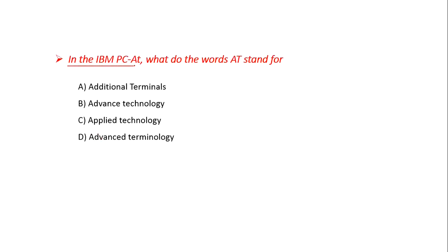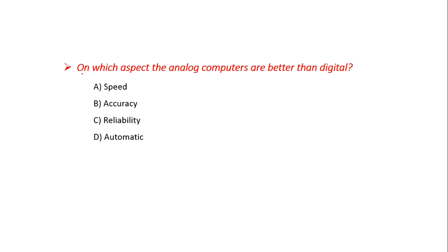In the IBM PC-AT, what do the words AT stand for? Option A: Additional Terminals, B: Advanced Technology, C: Applied Technology, D: Advanced Terminology. The answer is B: Advanced Technology. On which aspect are Analog Computers better than Digital? Option A: Speed, B: Accuracy, C: Reliability, D: Automatic. The answer is B: Accuracy.